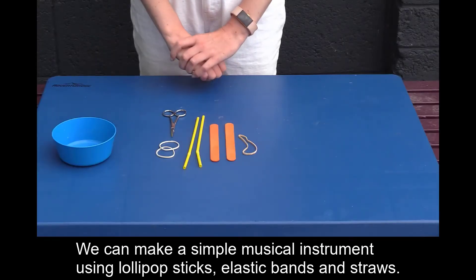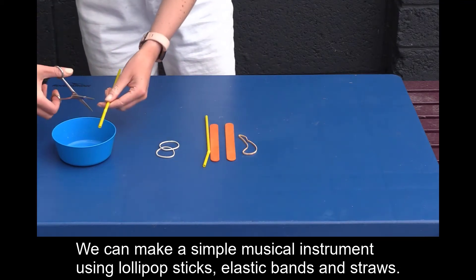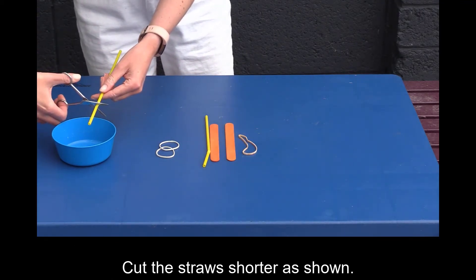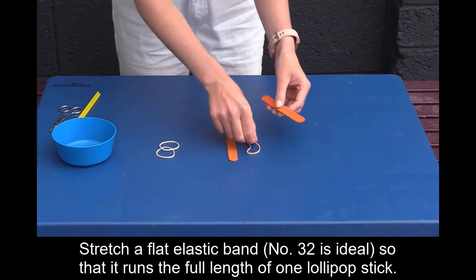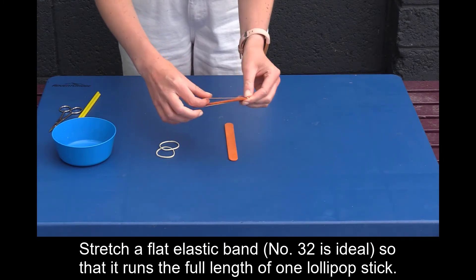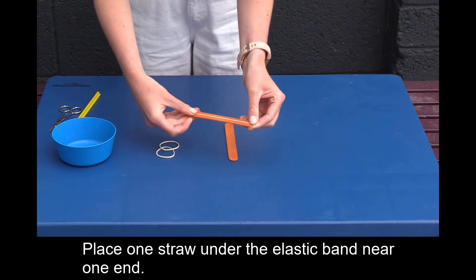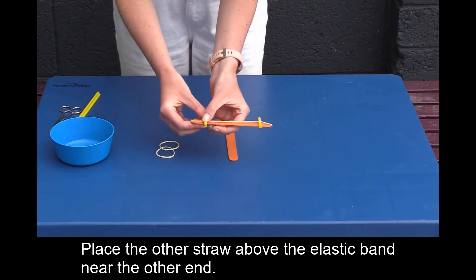We can make a simple musical instrument using lollipop sticks, elastic bands and straws. Cut the straws shorter as shown. Stretch a flat elastic band, number 32 is ideal, so that it runs the full length of one lollipop stick.